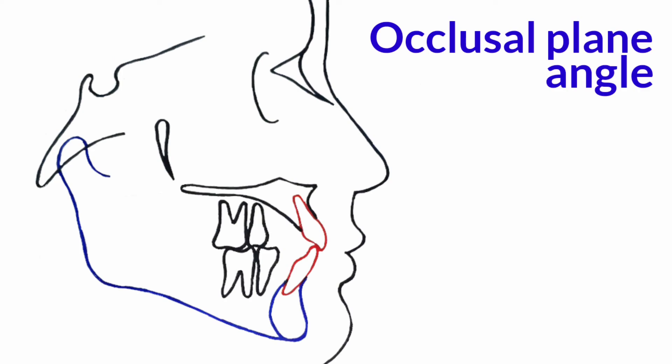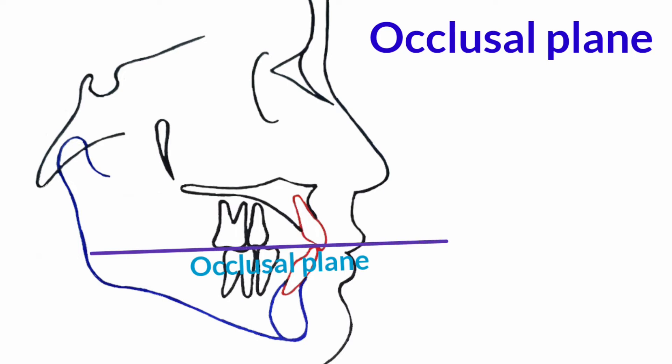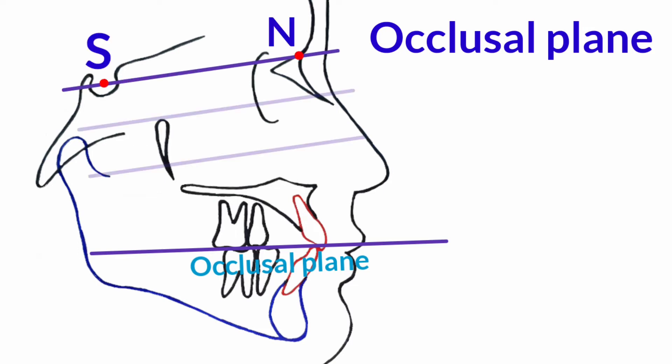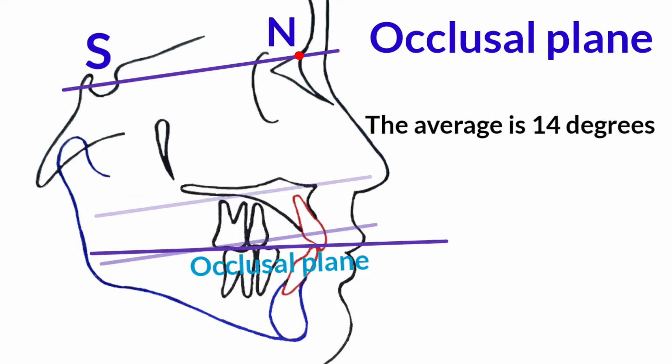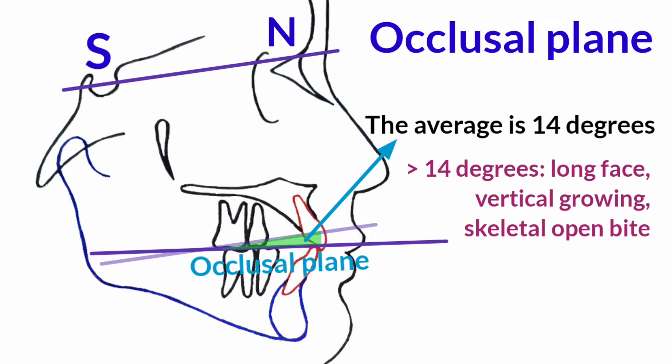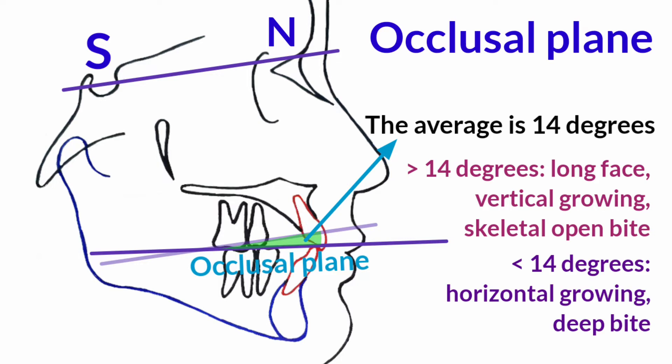The occlusal plane is drawn through the cusps of the first premolars and first molars. The occlusal plane angle is measured between the occlusal plane and the S-N plane. The average for normal occlusion is 14 degrees. The angle is increased in long-face or vertically growing individuals and in skeletal open bite cases. It may be decreased in horizontally growing individuals or cases with skeletal deep bite.